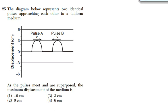The diagram below represents two identical pulses approaching each other in a uniform medium. As the pulses meet and are superposed, the maximum displacement of the medium is what?